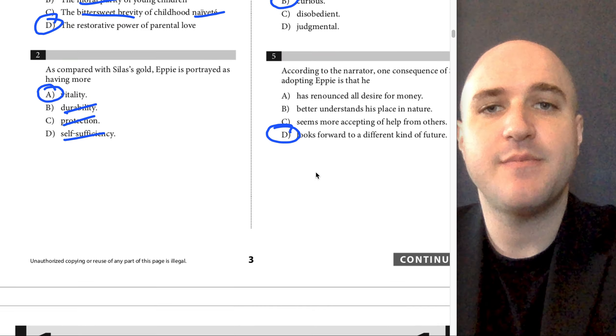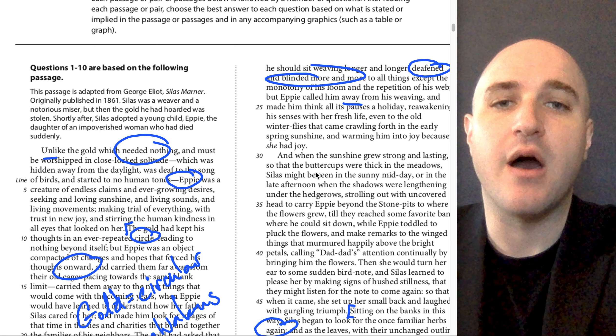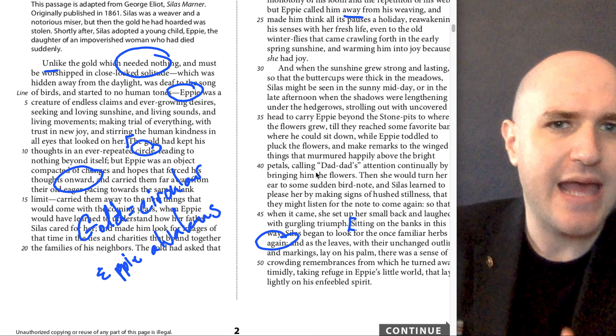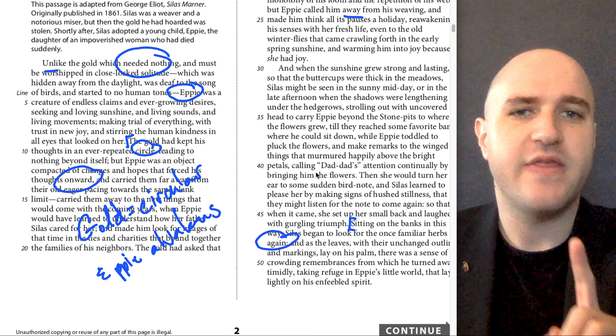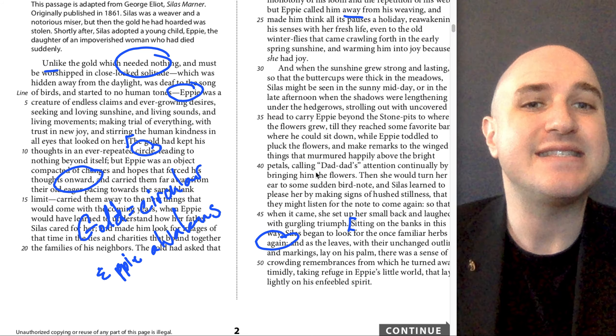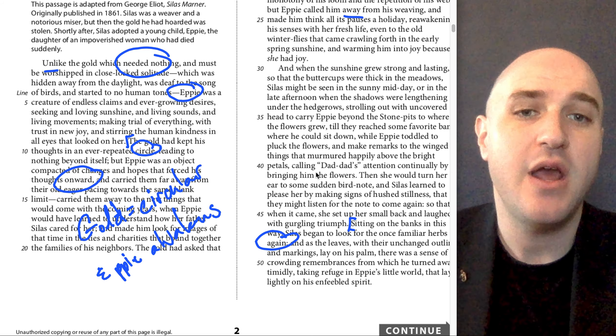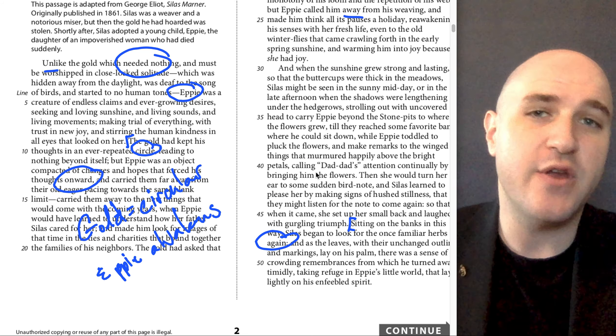So let's go back to that second passage and look at what is going on there. This is when the sunshine grew strong and lasting, they're out in the sun, they've got buttercups, Silas is seen in the sunny midday or the late afternoon, they're strolling, they're out in nature, they're enjoying.